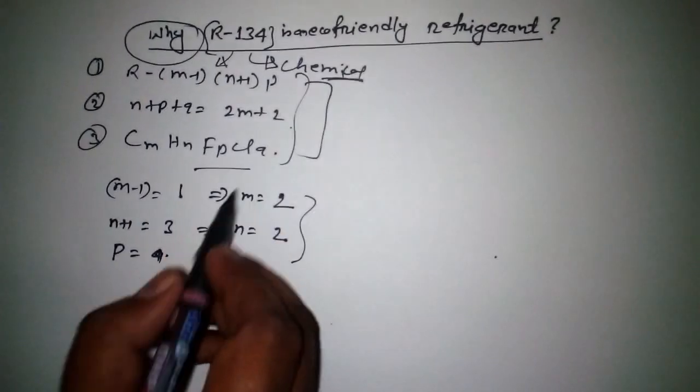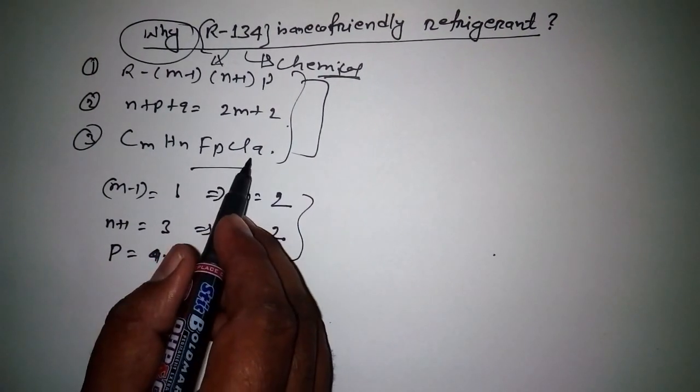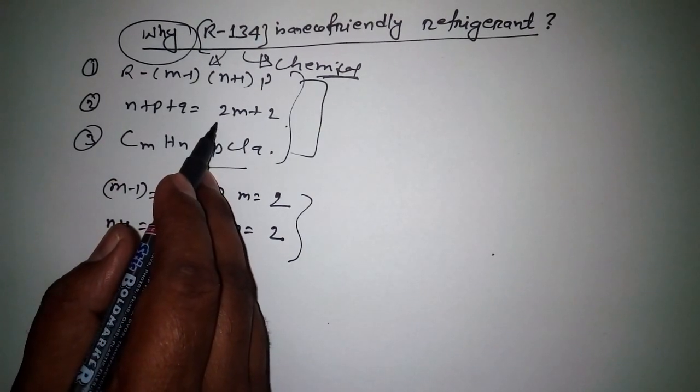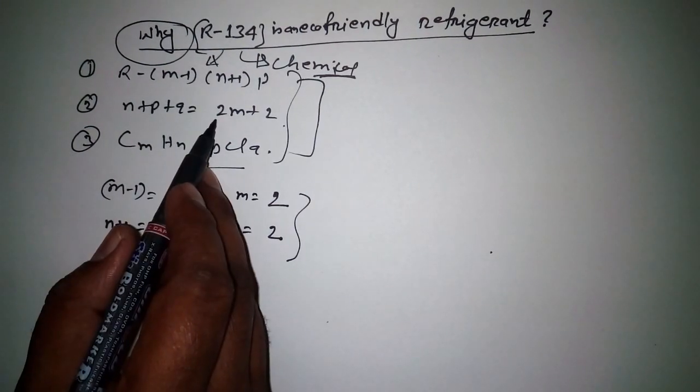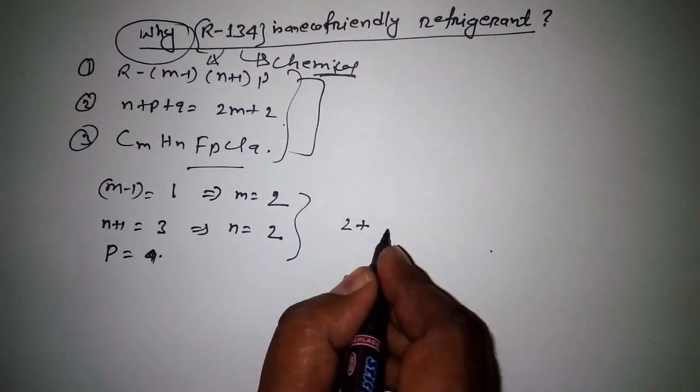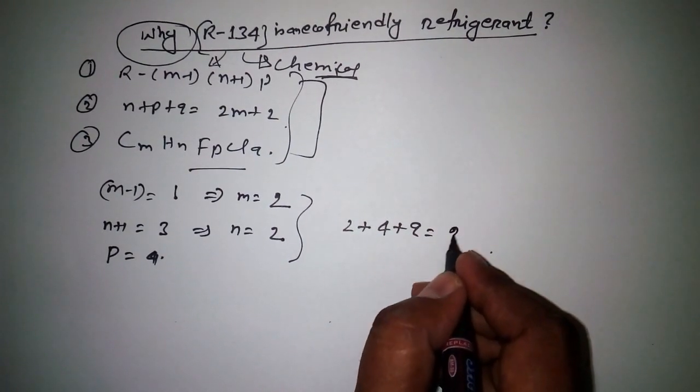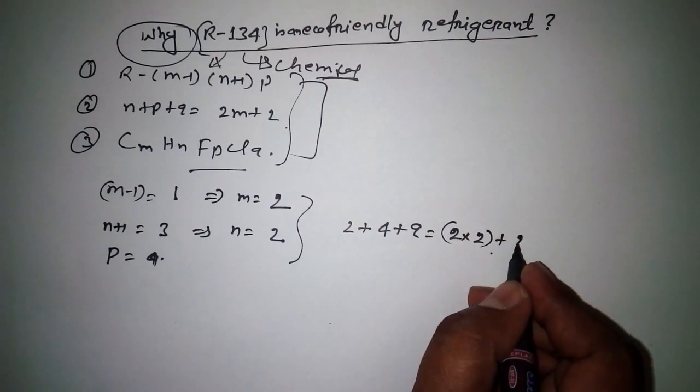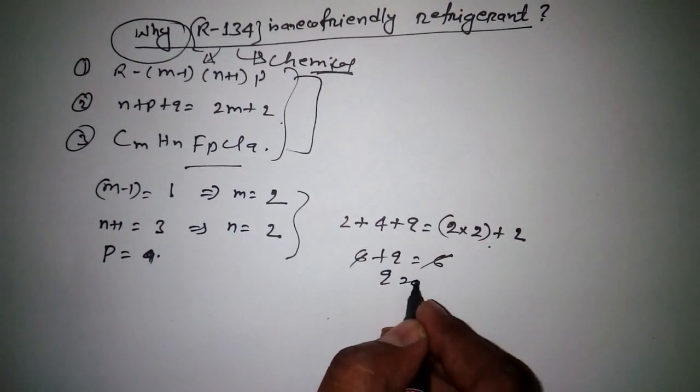If I put all these values, what am I missing here? q. So to find out q, we need to use this equation because in this equation, as you can see, we have all values but we don't have the value of q. So by using this equation we need to find out the value of q. That means n equals 2, p equals 4, and q we need to find out. 2m: 2 into 2 plus 2. So if I simplify all these, 6 plus q equals 6. 6 is cancelled, so q equals 0.